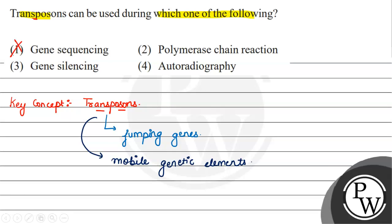What can we do in gene sequencing? In gene sequencing, we determine the sequence of nucleotides in a genome, which doesn't need transposons.